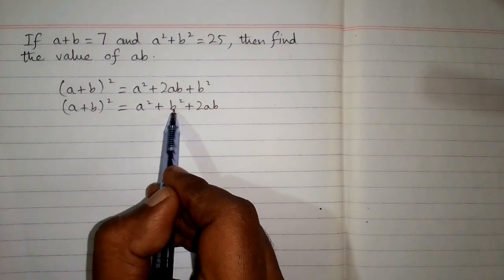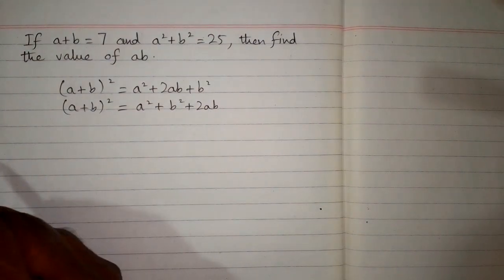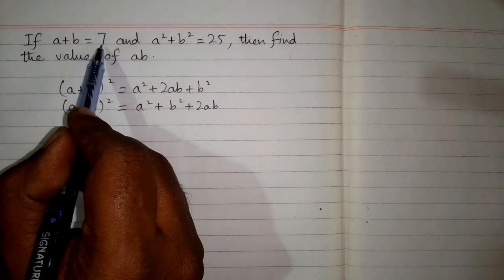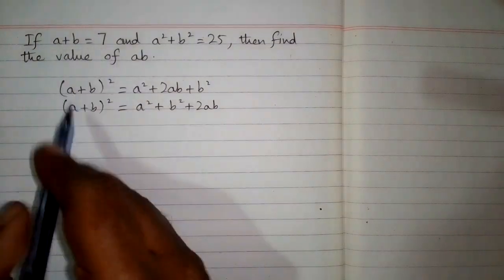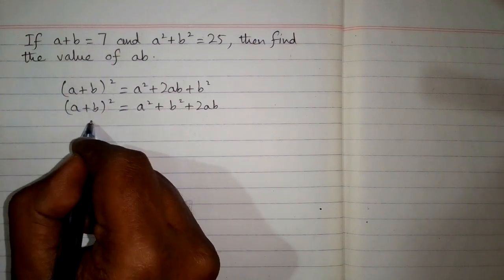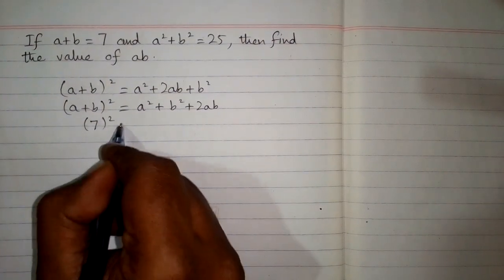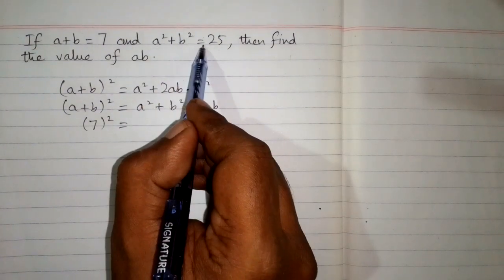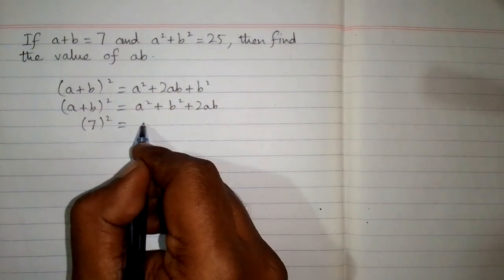Now we can see that the value of a+b is equal to 7. It is given in the question, so we will put 7 in place of a+b. And we can see that a² + b² is equal to 25, so we will write 25 in place of a² + b².